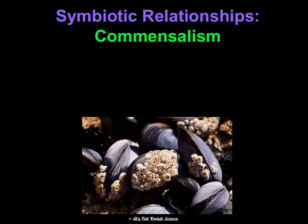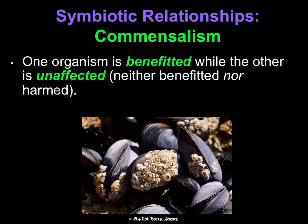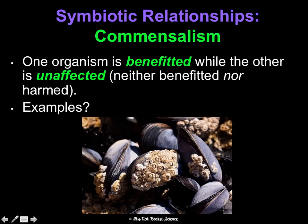Another type of symbiotic relationship is commensalism, where one organism is benefited while the other is unaffected — not helped or harmed. An example is barnacles that grow on mollusks, snails, or clams in the ocean. The barnacles benefit by being carried to different places to reproduce, while the shells of the clams and mollusks aren't hurt or harmed. This is a plus-zero relationship.